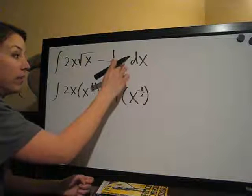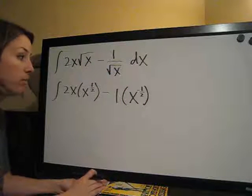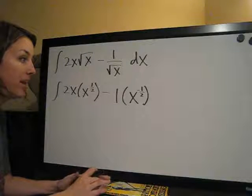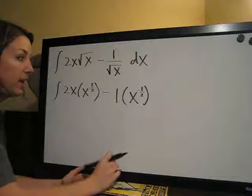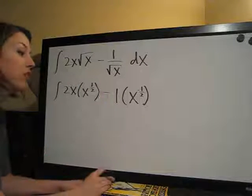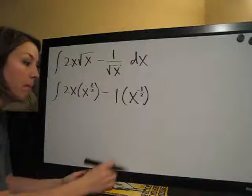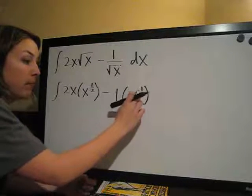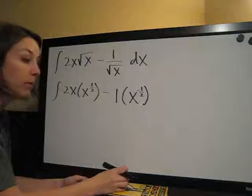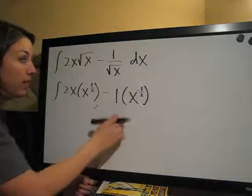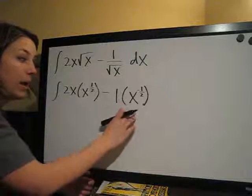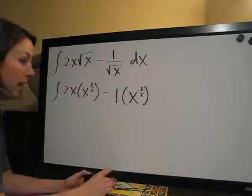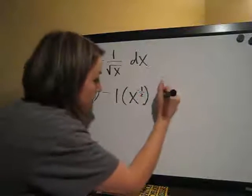So, normally we would have had 1 over x to the 1 half by converting this to x to the 1 half, but instead, since we don't want to deal with fractions, I went ahead and in the same step, moved it to the top and flipped the exponent, which we also explained in previous videos. So, instead of 1 over the square root of x, this becomes 1 times x to the negative 1 half, and then, of course, dx.